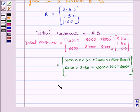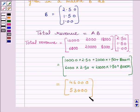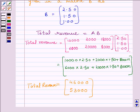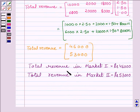On simplifying, we get the matrix 46,000 and 53,000. So total revenue for part A is given by the matrix 46,000 and 53,000. We can write: total revenue in market one is equal to Rs. 46,000 and total revenue in market two is equal to Rs. 53,000, since the rows represent the two markets.